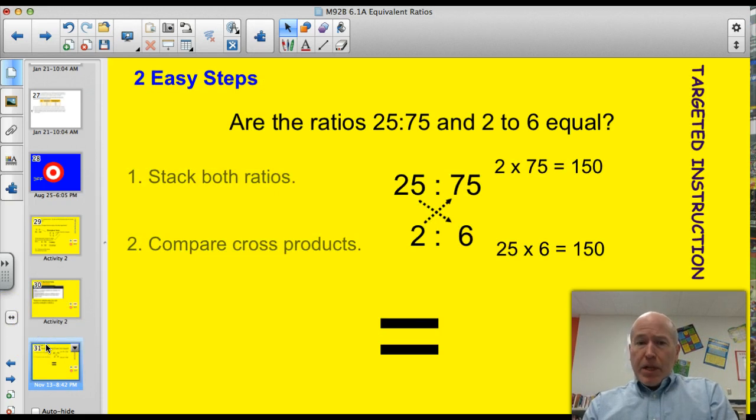Two easy steps. First of all, we need to stack the ratios, and then we compare cross products. So here's the problem. Are the ratios 25 to 75 and 2 to 6 equal? Remember, you can express ratios with a colon or the word 'to'. So I stack my ratios: 25 to 75 and 2 to 6. Now I just multiply across and compare.